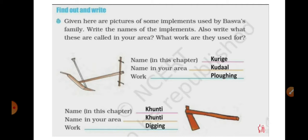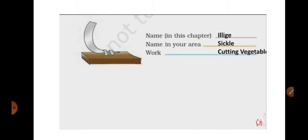There are pictures of implements used by Basva's family. Write the names of the implements and what they are called in your area. First one: name in this chapter is courage, name in your area is kudal in Hindi, work — for plowing/sowing the seeds. Second: name in this chapter is kunti, name in your area is kunti, work — for digging or loosening the soil. Third: name in this chapter is leech, name in your area can be sickle, work — for cutting.